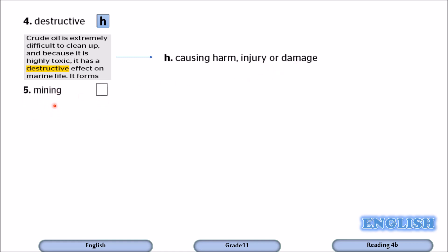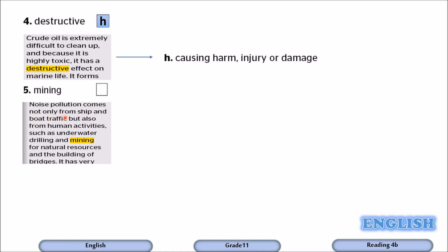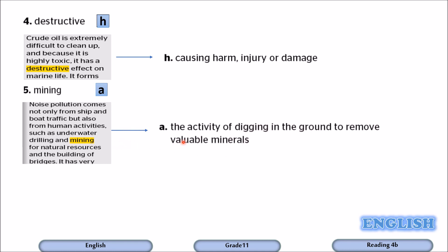Number five: mining. The sentence reads: 'Noise pollution comes not only from ship and boat traffic, but also from human activities such as underwater drilling and mining for natural resources and the building of bridges.' Mining means the activity of digging in the ground to remove valuable minerals. It goes with A.